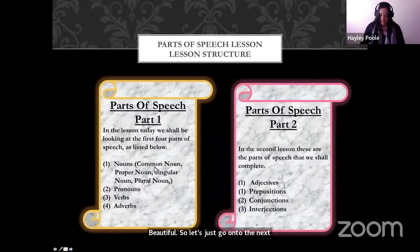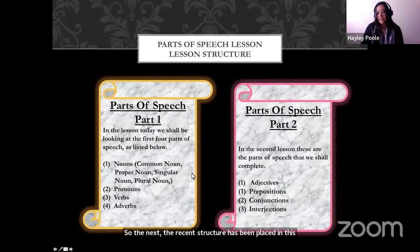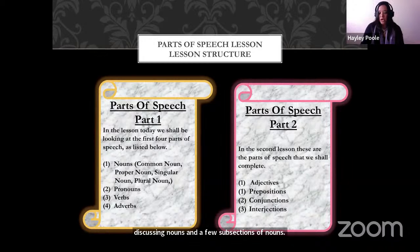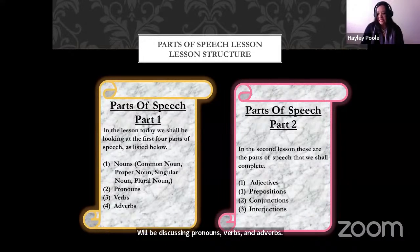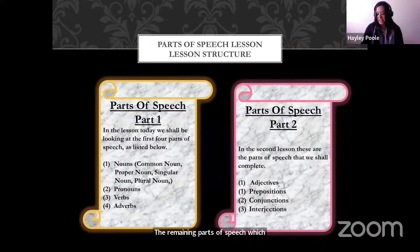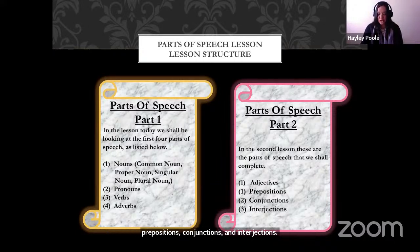So the lesson structure has been placed in this order. There will be two lessons. In the first part, we will be discussing nouns and a few subsections of nouns. We'll be discussing pronouns, verbs, and adverbs — that's the yellow sheet we will be doing today. In the second lesson, we will be discussing the remaining parts of speech: adjectives, prepositions, conjunctions, and interjections, which will be scheduled shortly.